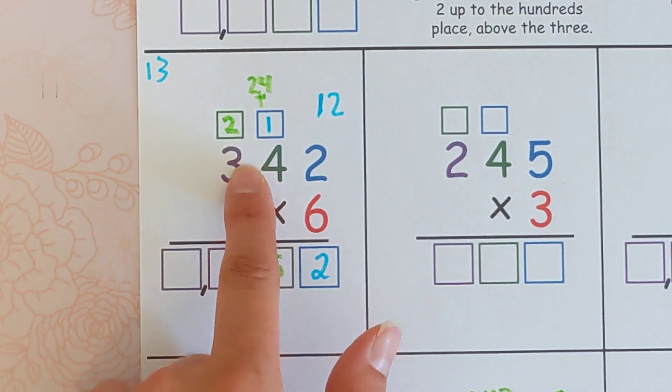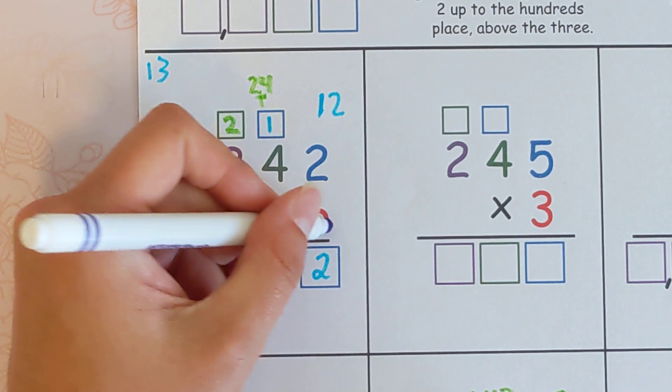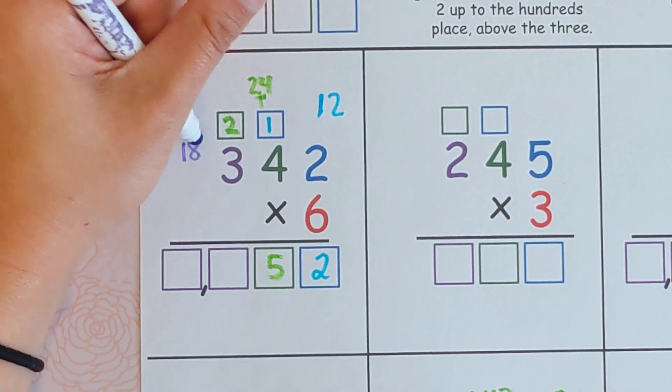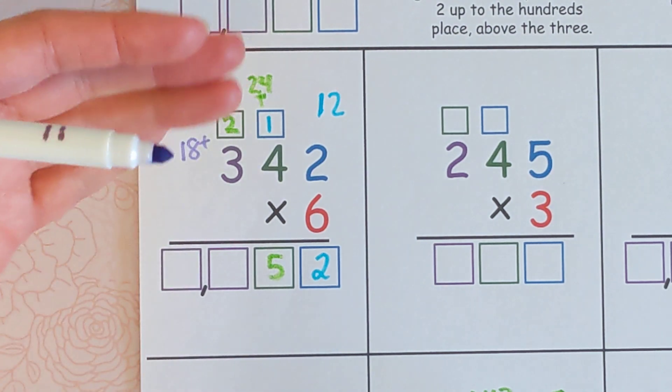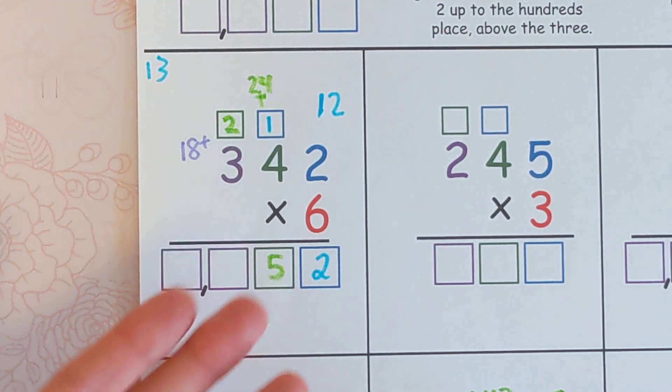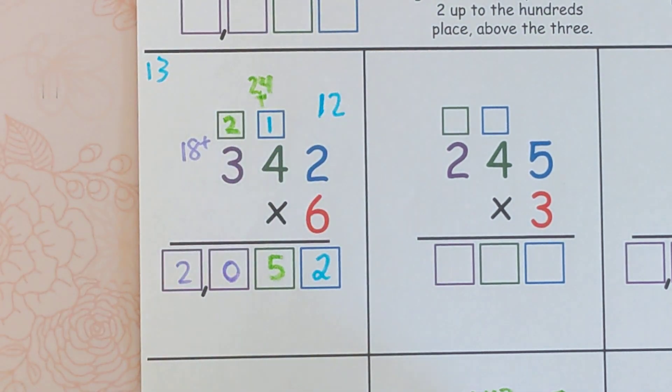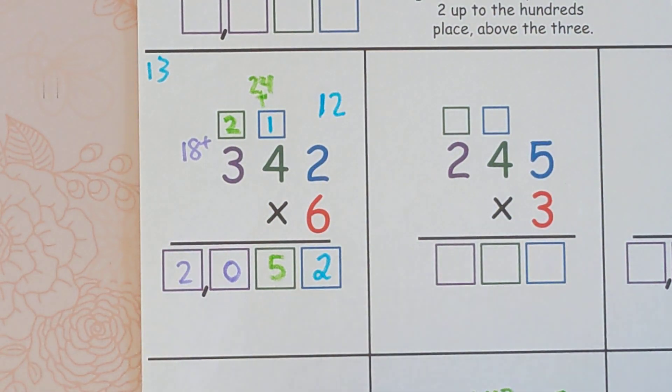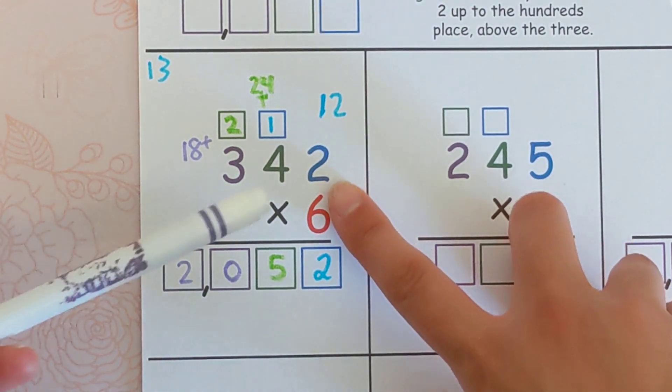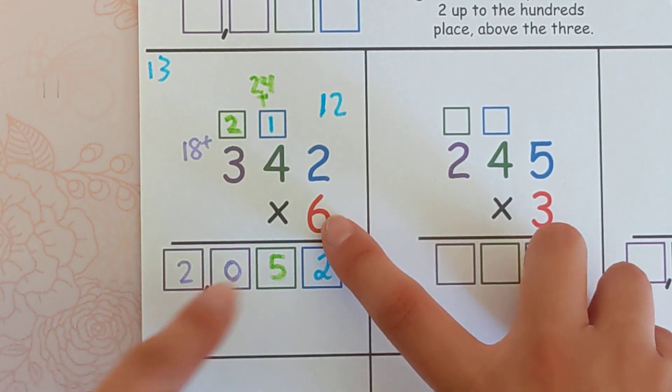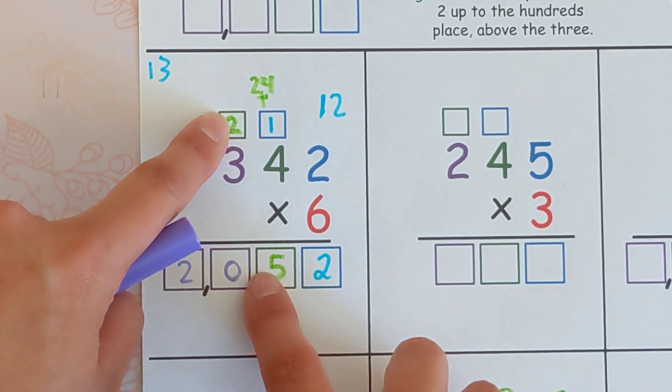So now we'll do six times three. And you can see the purple boxes here, so I'm going to switch to purple. Six times three is 18 plus two is 20. And now there's nowhere to carry. So when you're at the end, you don't have to carry. You can just put the full thing down there. So 18 plus two is 20. Put that on there.